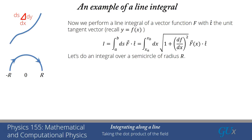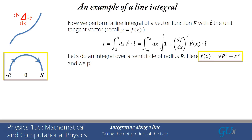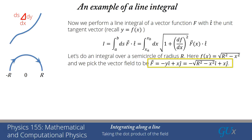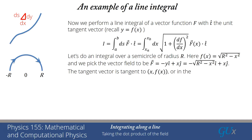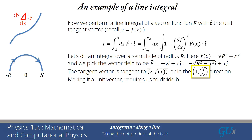Let's pick the same semicircle of radius r, so f of x is the square root of r² minus x². Let's pick our vector field to be minus y plus x — that's a vector field with counterclockwise circulation, whereas our integral is going in a clockwise direction. Substituting in y, we get minus the square root of r² minus x² times the unit vector in x, plus x times the unit vector in y. We need to determine the tangent vector. Our curve is (x, f of x), so the tangent vector is (1, df/dx).